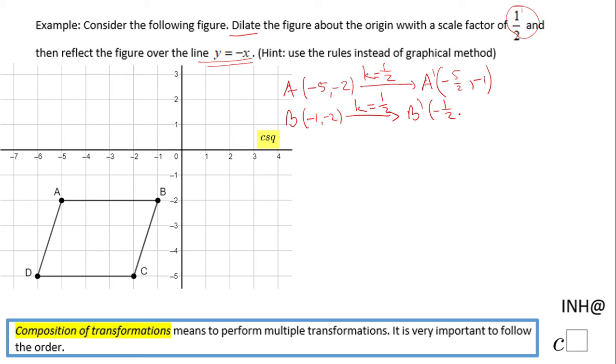Point C, which has the coordinates negative two and negative five, under this dilation of k equals one-half becomes C prime, which is going to be negative one and negative five over two. So again, we multiply by that one-half the coordinates of point C.